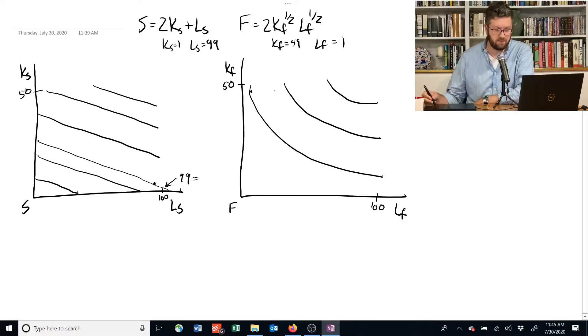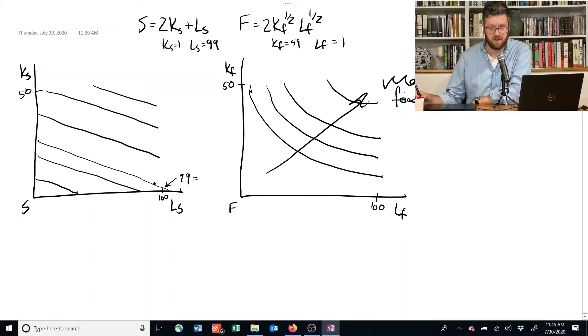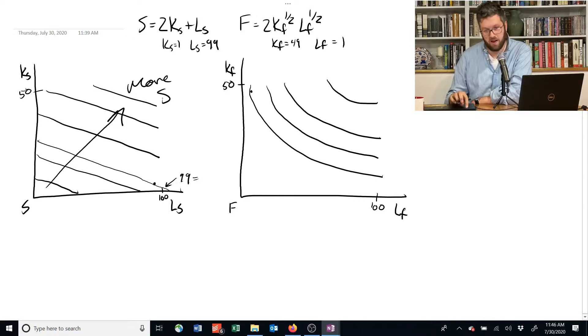We can see that if we moved, there's an isoquant that we could draw sort of at any point in this space. We could figure out what that's equal to, how much capital or how much food that generates. Remember, as we go in this direction, we get more food. As we go in this direction, we get more shelter because we're allocating more and more capital and labor to producing shelter.